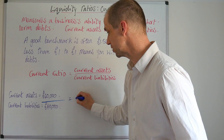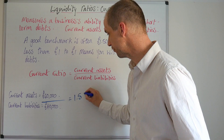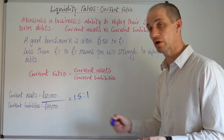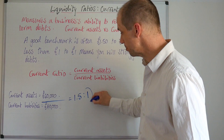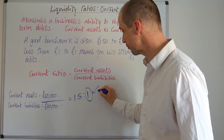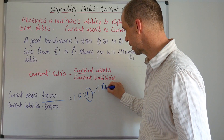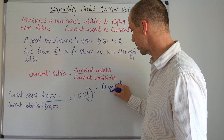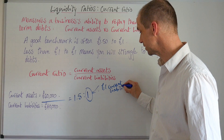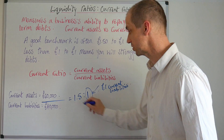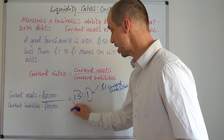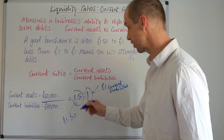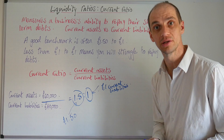That ratio, in this instance, would be 1.5 to 1 — expressed as 1.5:1. What this means is that for every £1 of current liabilities, this business would actually have £1.50 of current assets for every pound of current liabilities.